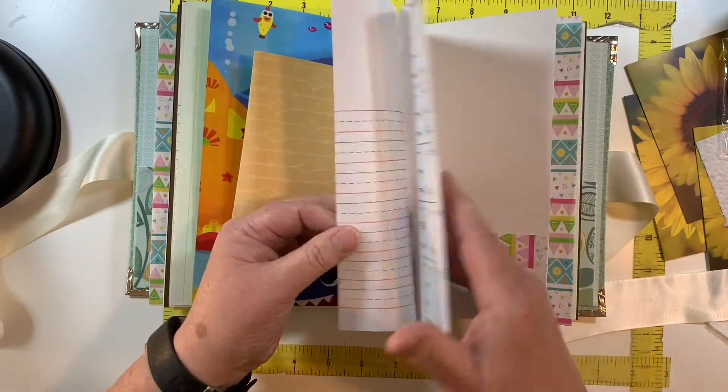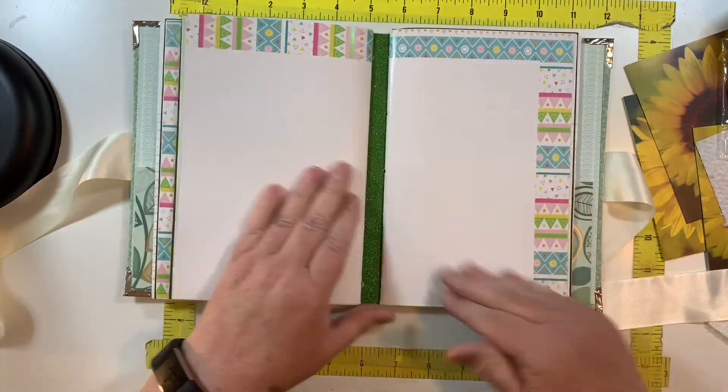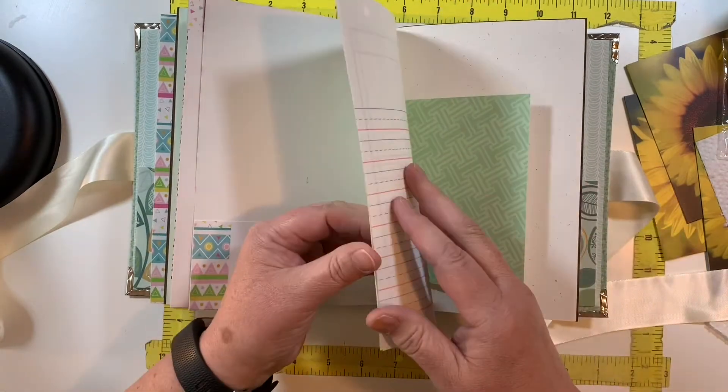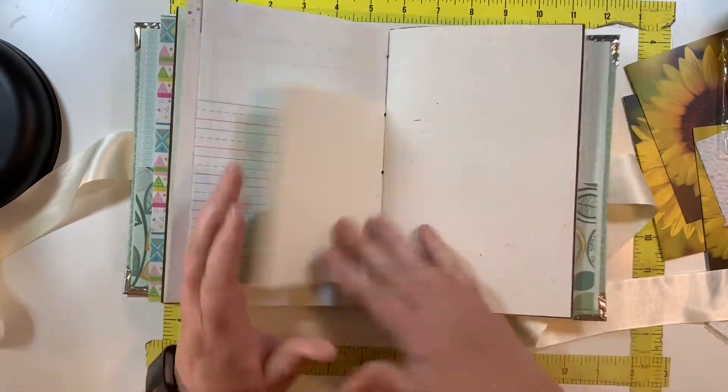And I'll also show you some things I've pulled out. And here's the third signature. Ledger paper, lined paper, note card.